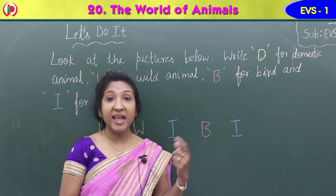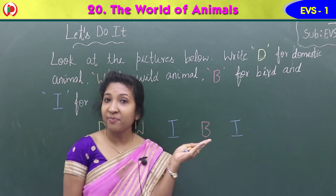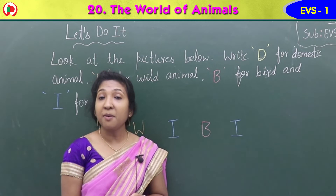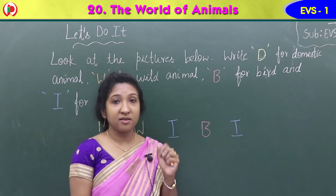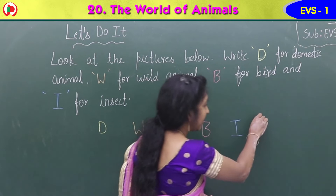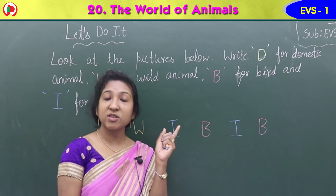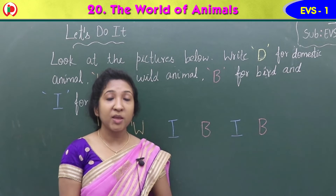Coming to the sixth image — what can you see here? It is a pigeon. Pigeon is a bird; it can fly. So it is a bird and you can write B.